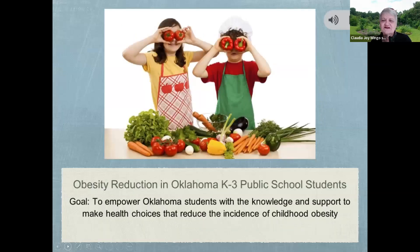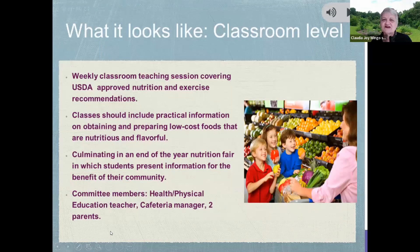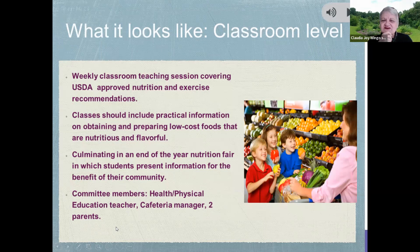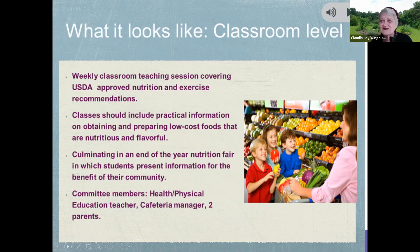This was a program that a student did with the health department of Tulsa, Oklahoma, working in an Oklahoma public school with kindergarten through third grade to empower students to make healthy choices around food when they're young. She put together a program based on USDA-approved nutrition and exercise, with weekly classes and a nutrition fair at the end of the year, bringing in the physical education and health teacher, cafeteria management, and a couple of parents to help. Ultimately, she was hired by the public health department to run a school program — so often, from your practicum, you get a job.